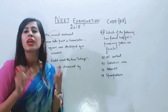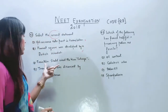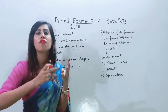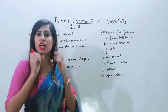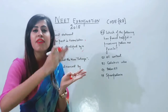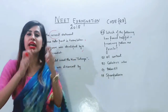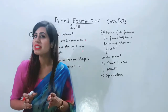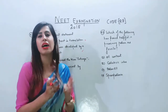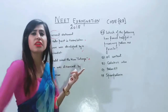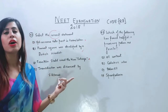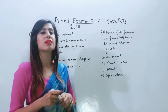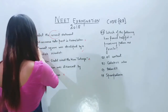The next option: Punnett square was developed by a British scientist. NCERT clearly states it was given by British scientist Reginald Punnett, so this statement is correct. The next one: Franklin still coined the term linkage. Linkage is the physical association of genes on a chromosome — the tendency of genes to stay together and pass together to the next generation. This was given by Thomas Hunt Morgan, so that statement is incorrect. Next: transduction was discovered by Altman. Altman discovered the chemical nature of nucleic acid and gave the term nucleic acid, so this statement is also wrong. The correct answer is option number two.